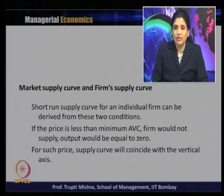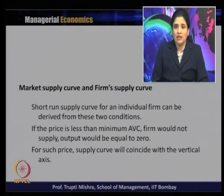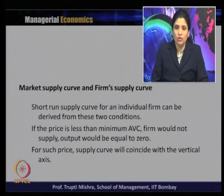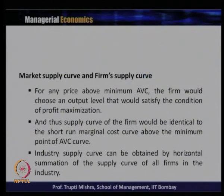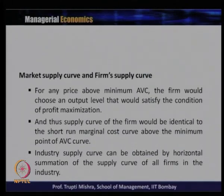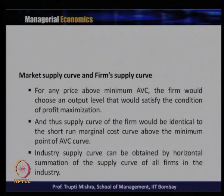If price is less than the minimum of AVC, the firm would not supply — output equals zero — and the supply curve will coincide with the vertical axis. For any price above the minimum of AVC, the firm chooses an output level satisfying the profit maximization condition. The supply curve of the firm is identical to the short-run marginal cost curve above the minimum point of AVC. The industry supply curve is obtained by horizontal summation of the supply curves of all firms in the industry.